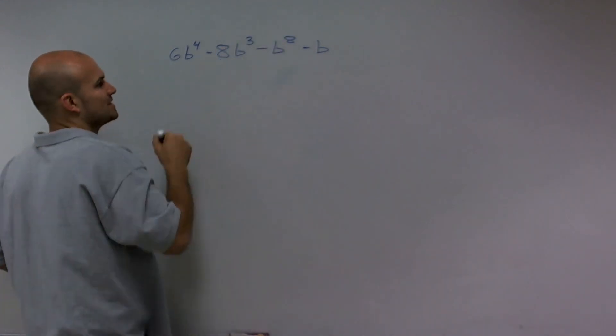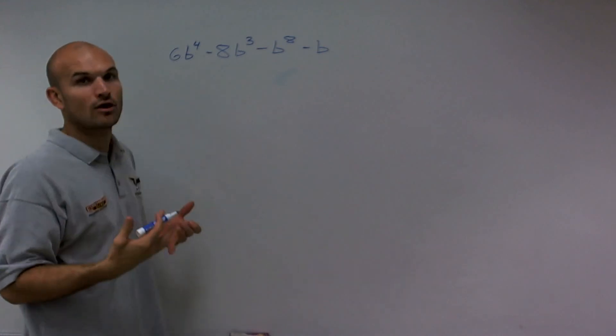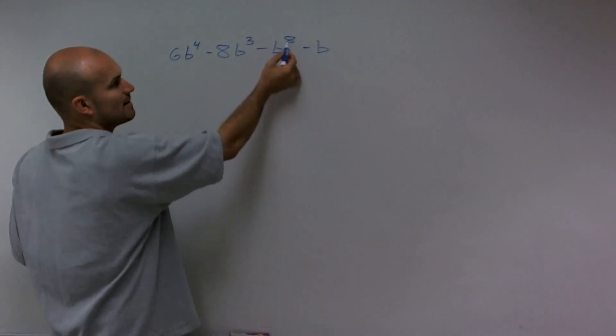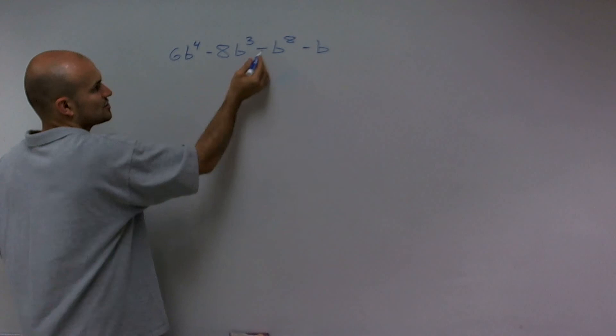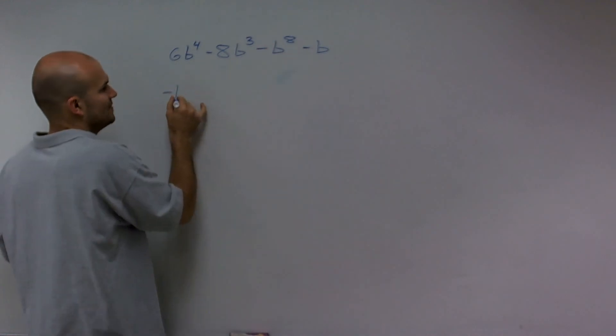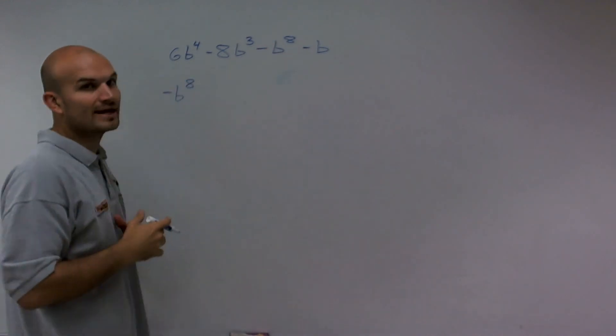I want to make sure I write my largest degree or exponent first. Here, my largest exponent is 8. So I'm going to take that term, which is negative b to the eighth, and I'm going to write that first.